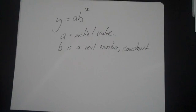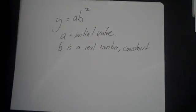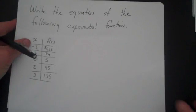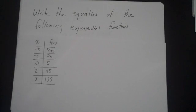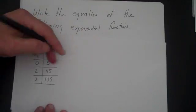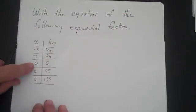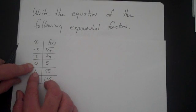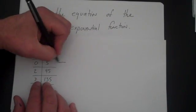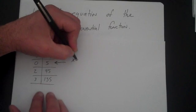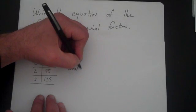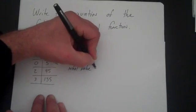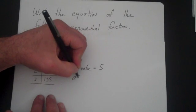So first let's look at a problem with a table. Let's write the equation of the following exponential function. Now the key to this problem is that we have a value where x is zero. This is actually when x is zero gives us the initial value. So we have the initial value is equal to 5, so a is equal to 5.